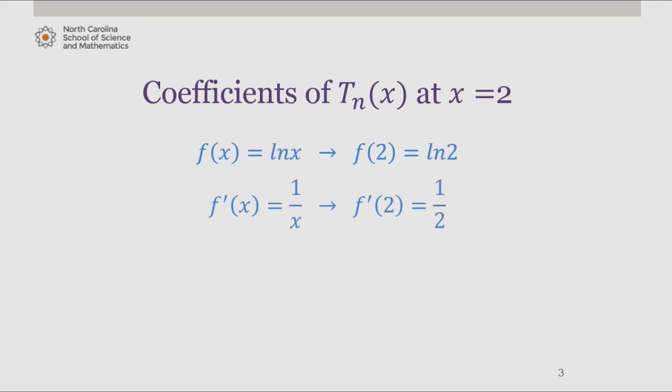First derivative is 1 over x, evaluated at 2 is 1 over 2. Second derivative is negative 1 over x squared, evaluated at 2 is negative 1 fourth. Third derivative is 2 over x cubed, evaluated at 2 is 1 fourth.